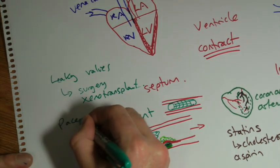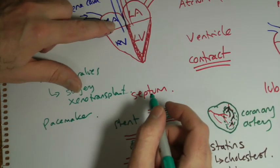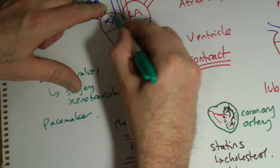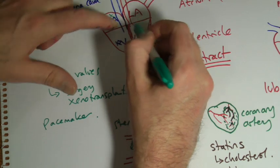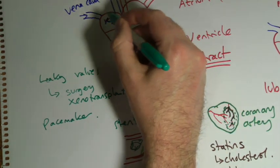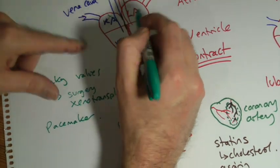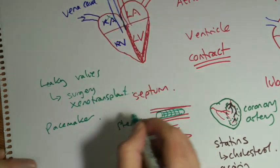A pacemaker is a fairly common thing to have put in. Actually, your heart itself has a region up on here that sort of tells your heart how many times to beat. And it's called the pacemaker region of your heart. But sometimes it doesn't work very well. So you can have an artificial one put in and it tells your heart to keep beating regularly. So that's what a pacemaker does.